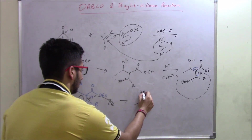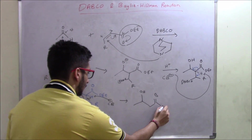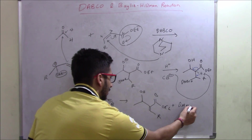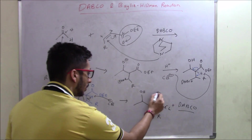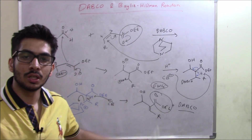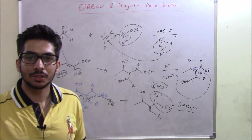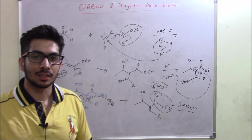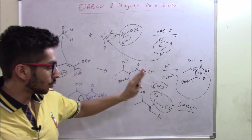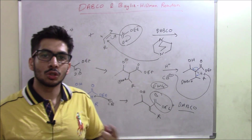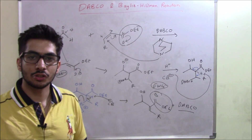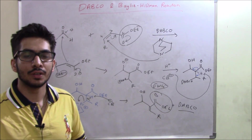The final product of the Baylis-Hillman reaction is drawn: we have OH, then a double bond, then the ester OEt, with the R group — and DABCO is regenerated. Since DABCO is regenerated, it can act as a catalytic reagent. This electron-withdrawing group can be any group — ester, ketone, nitro group, or anything else. DABCO is used for two reasons: it's a good base that activates the reaction, and it's a good leaving group so it can be released and act as a catalyst.